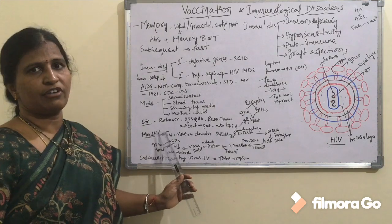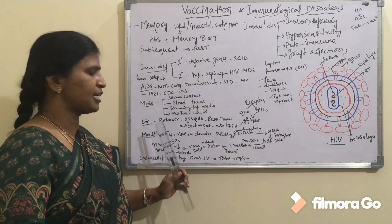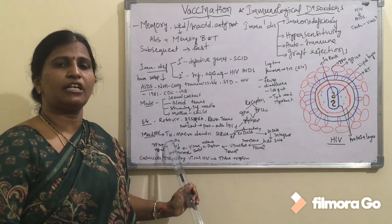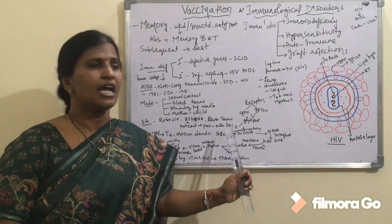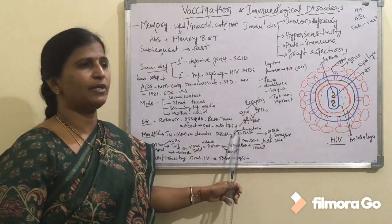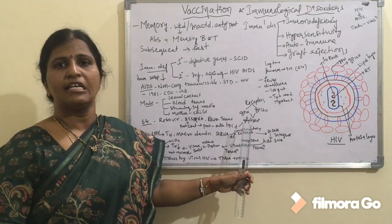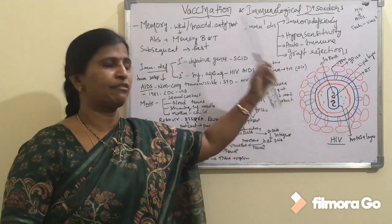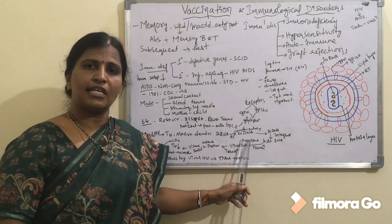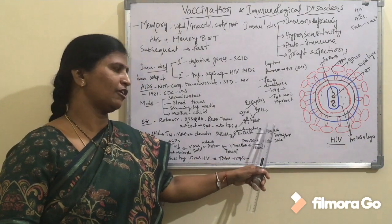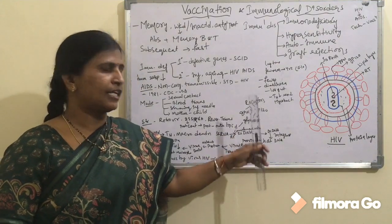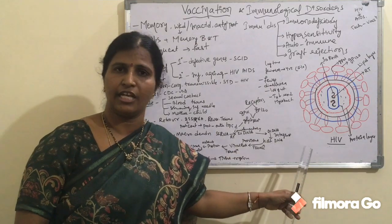Coming to the mechanism of HIV: whenever the HIV virus enters the host, it infects helper T cells, macrophages, and dendritic cells. The single-stranded RNA present in the virus is used to synthesize its complementary single-stranded DNA with the help of reverse transcriptase enzyme. Later, through DNA synthesis, this single-stranded DNA develops its complementary DNA strand so that double-stranded DNA is synthesized.